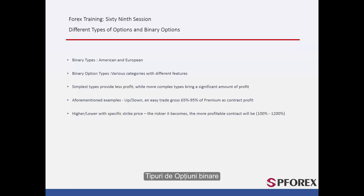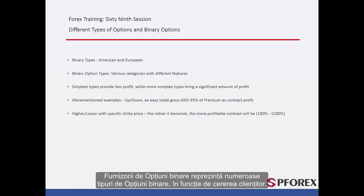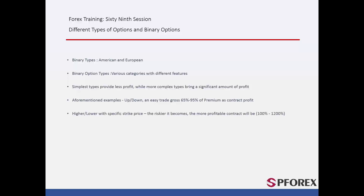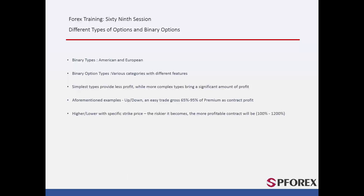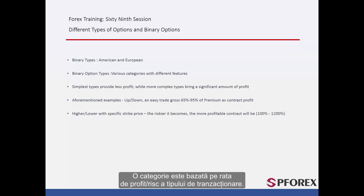Binary option providers offer numerous kinds of binary options based on their clients' demand. The simplest types are the most common trading methods. Binary options are categorized based on different features. One category is based on profit and risk rate of a trading type. Consequently, the riskier one inevitably has a more attractive profit rate.